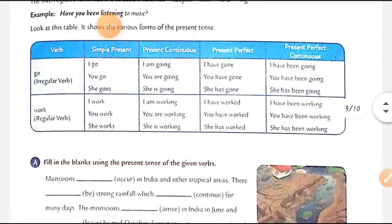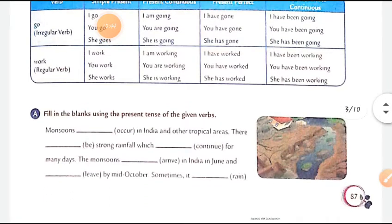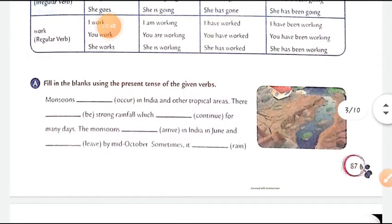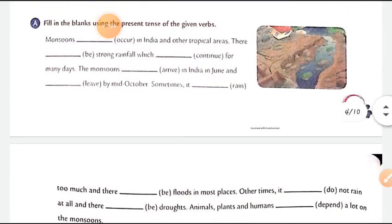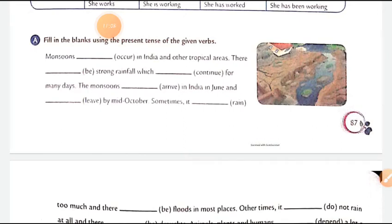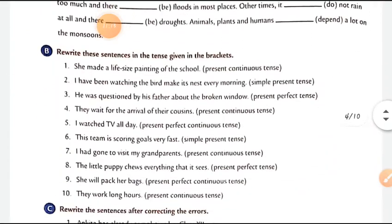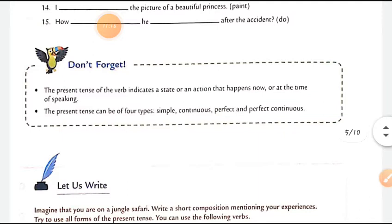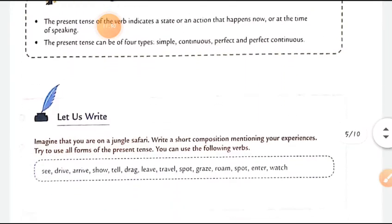A summary table is given where you need to fill in 'is/am/are' accordingly. For example: 'There is strong rainfall.' Complete the exercises accordingly. Remember: the present tense of the verb indicates a state or action that happens now or at the time of speaking. The present tense can be of four types: simple, continuous, perfect, and perfect continuous.